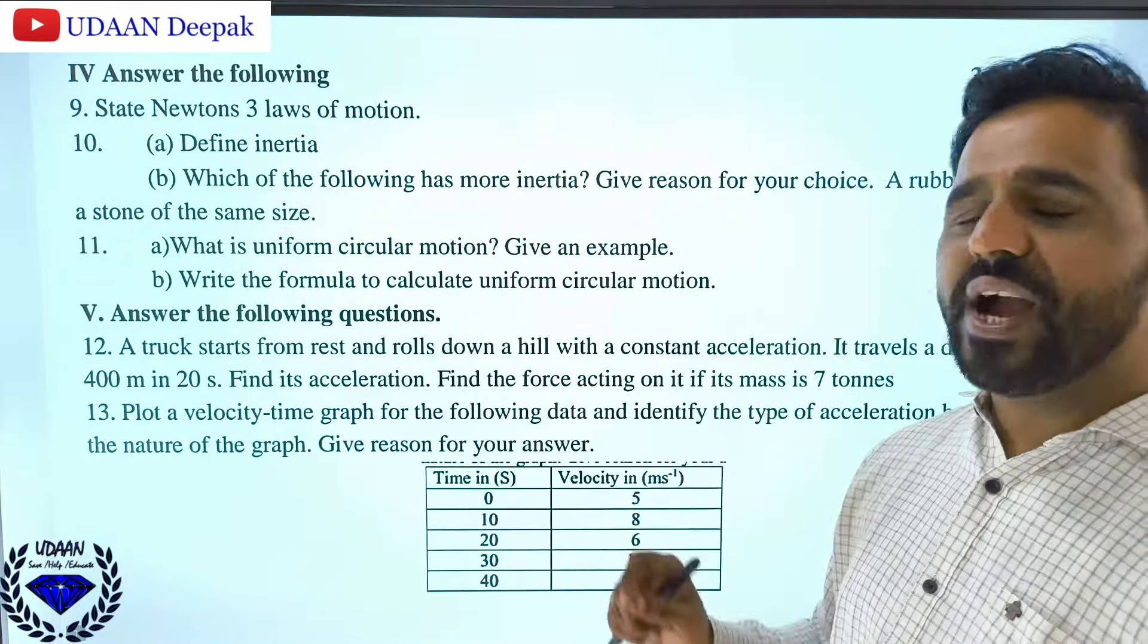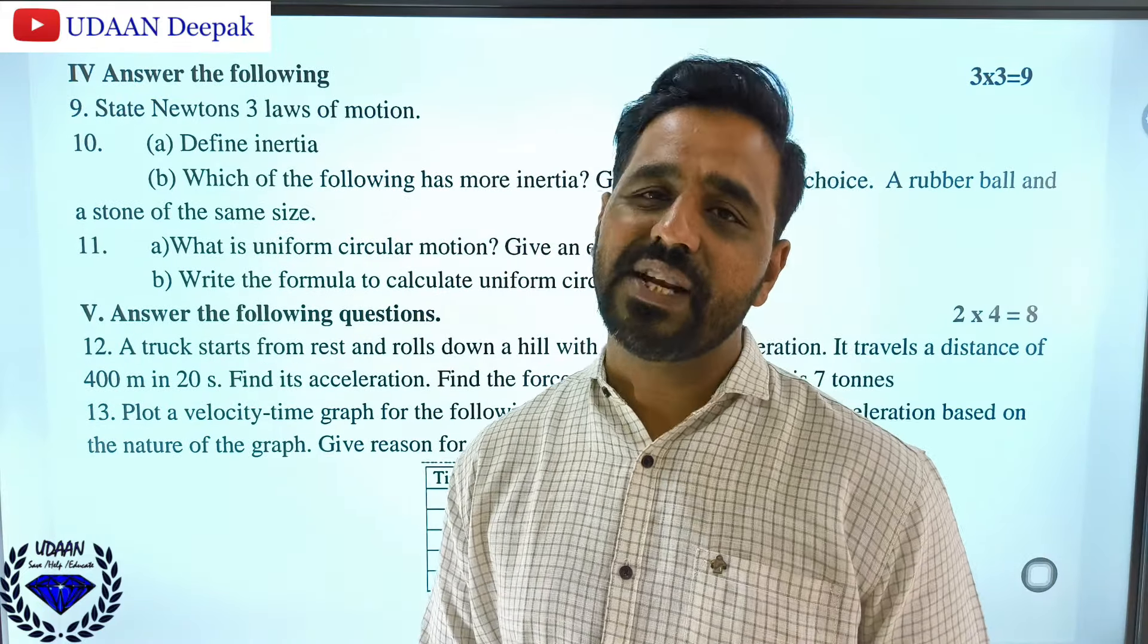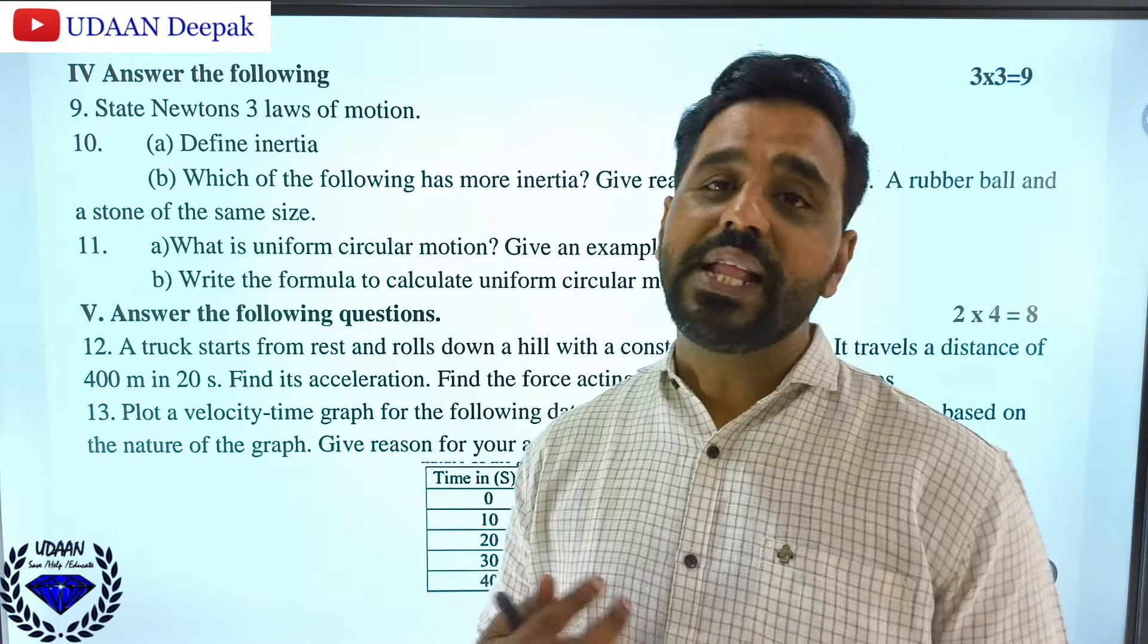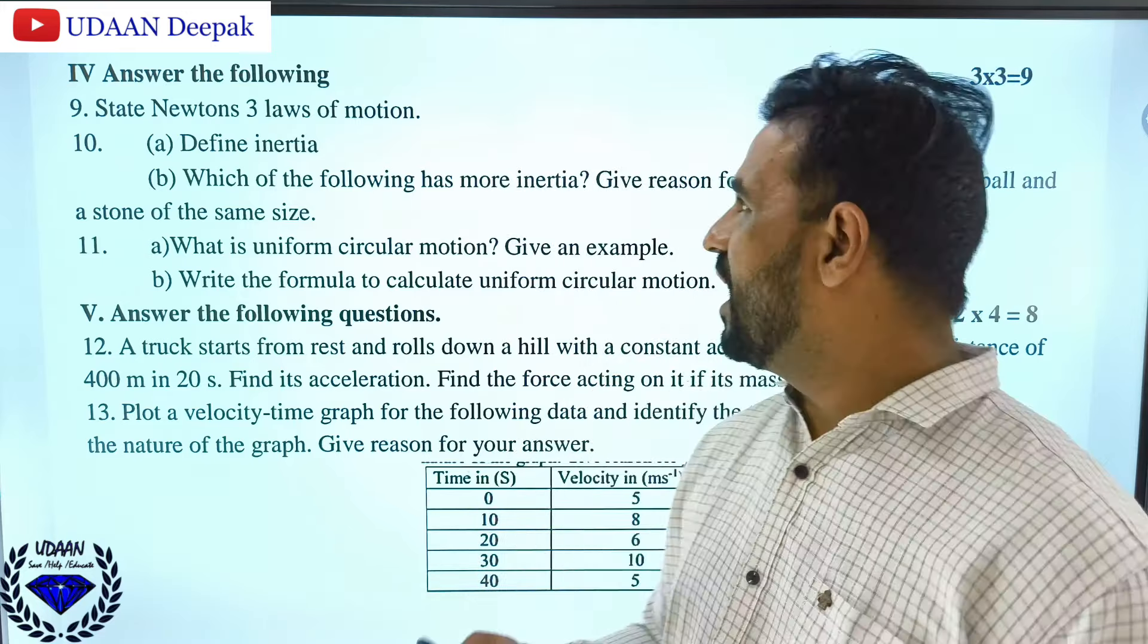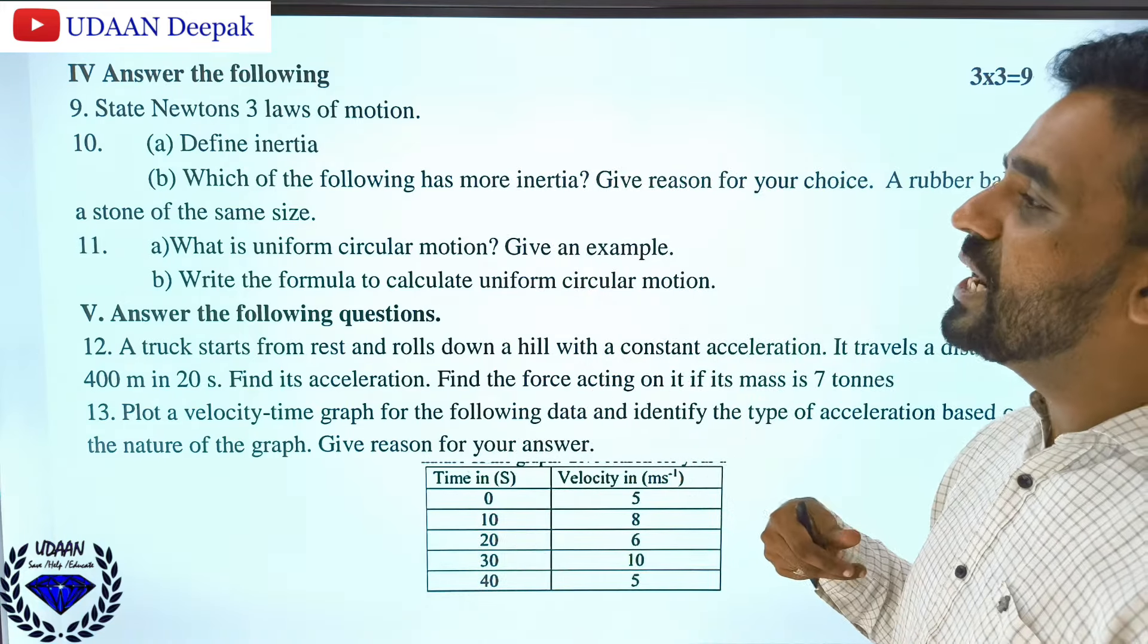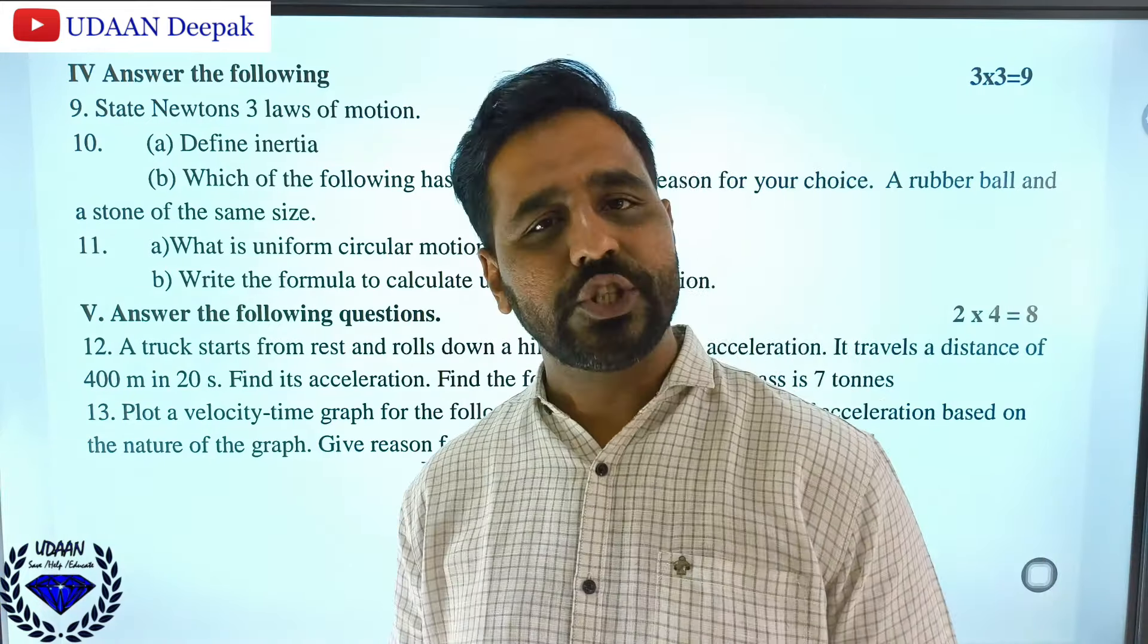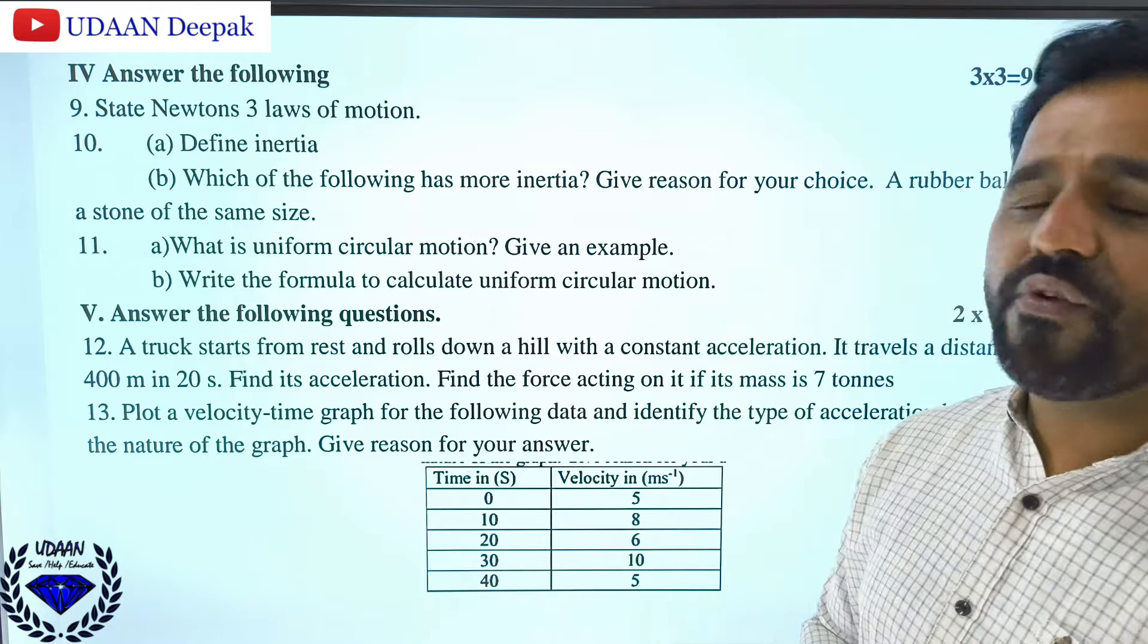Define inertia. Inertia is the tendency of a body to resist change in its state of rest or motion. Which of the following has more inertia? Inertia is the measure of mass - more the mass, more the inertia. So a stone of the same size as a rubber ball has more mass, therefore more inertia.